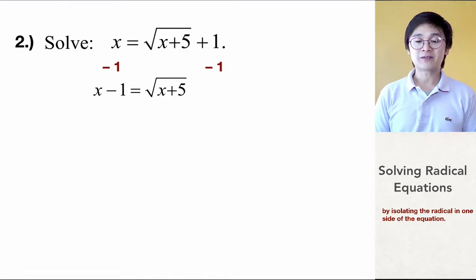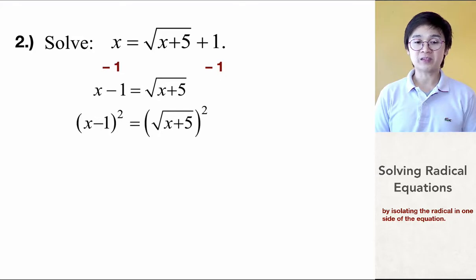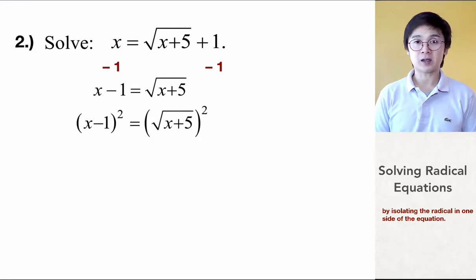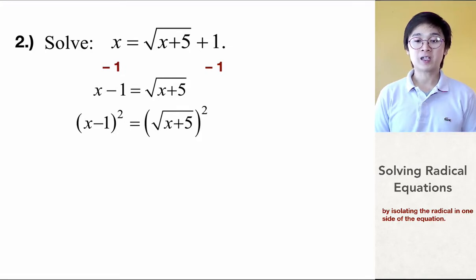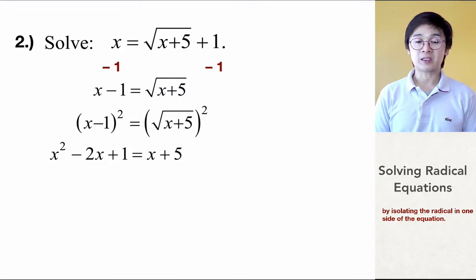And now, all we are left to do is to square both sides. By taking the square of both sides, we're going to get rid of the radical symbol. However, you will notice that we have x minus 1 quantity squared on the left side of the equation. So, to expand x minus 1 raised to the second power, we're going to multiply x minus 1 times x minus 1, leaving us with x squared minus 2x plus 1. And since we got rid of the radical symbol by squaring both sides, we are only left with x plus 5 on the right side.